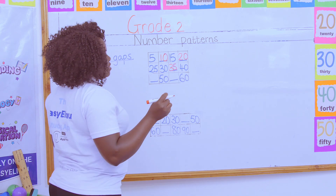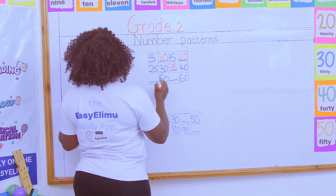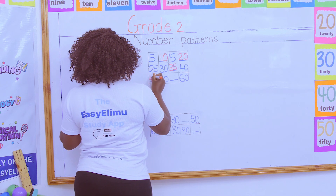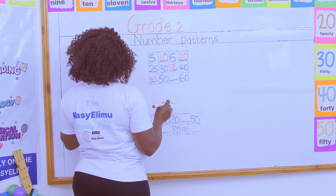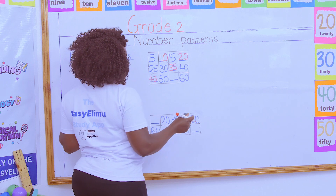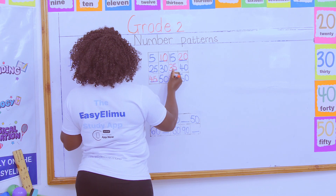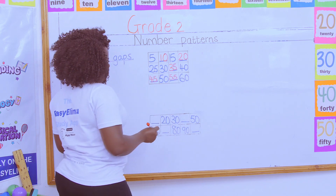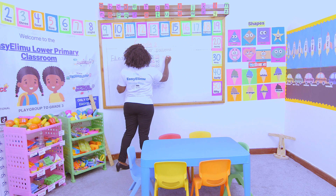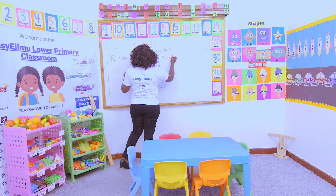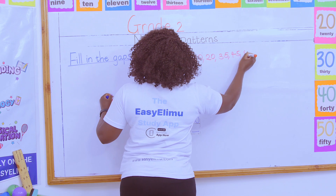Then from forty, when you add five — forty-one, forty-two, forty-three, forty-four, forty-five. So you get forty-five. Then after forty-five, you get fifty. After fifty — fifty-one, fifty-two, fifty-three, fifty-four, fifty-five. Very good. So, which ones are our missing numbers? Our missing numbers are ten, twenty, thirty-five, forty-five, and fifty-five.